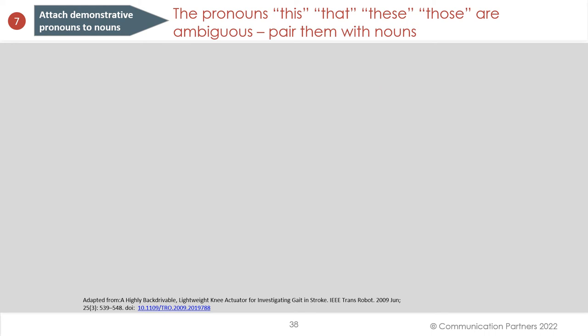Principle number seven: attach demonstrative pronouns to nouns. English has several pronoun types: personal pronouns — he, she, they, we; impersonal pronouns — it; relative pronouns — who, what, which; and demonstrative pronouns — this, that, these, and those. If demonstrative pronouns are isolated and unattached, they're often ambiguous. The good rule to follow is always pair them with nouns.